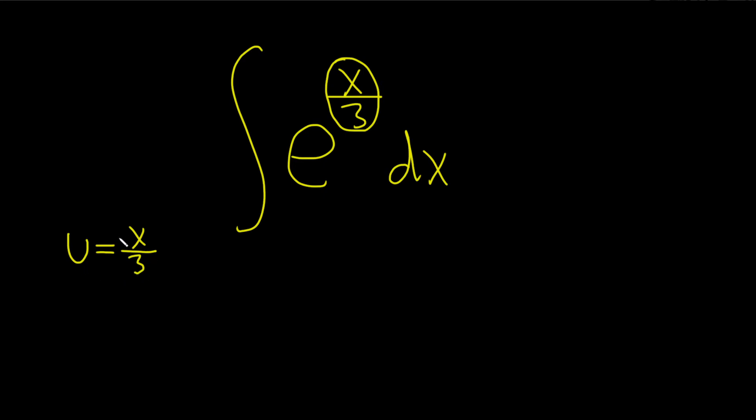And now we have to take the derivative of this. However, it might be better if we think about it like this: u equals 1 third times x. So now when you take the derivative, it's just easier to think about.